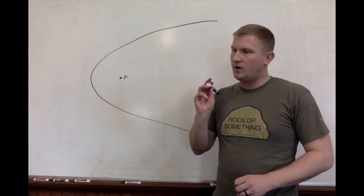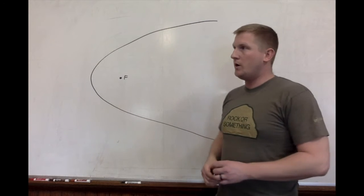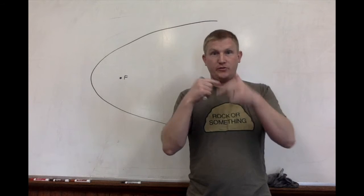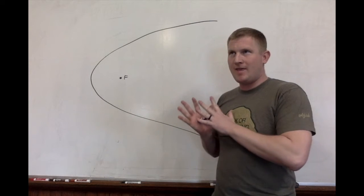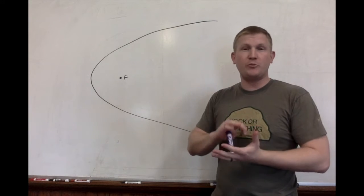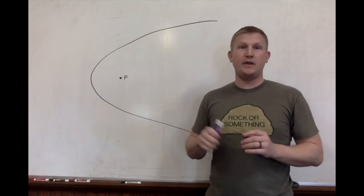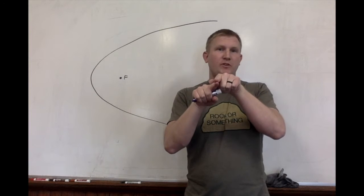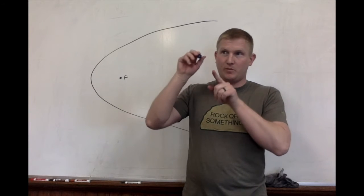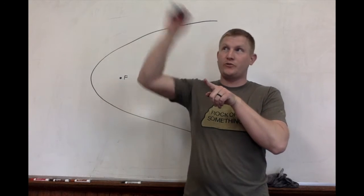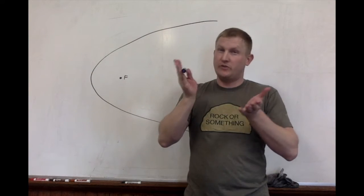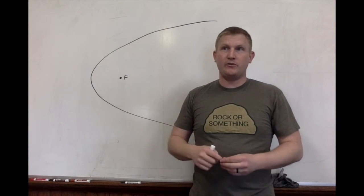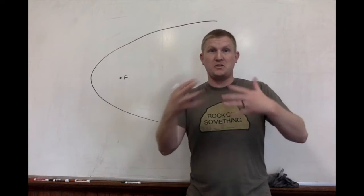If you remember from our discussion on the ellipse, when we discovered the focal property that the sum of those two distances is constant, we saw that description is maintained in the circle, except that the two focus points, or foci, are on top of each other. So that distance from one focus point to the circumference to the other focus point is constant—it's just twice the radius, which is the major axis or diameter, right?